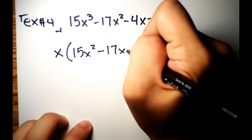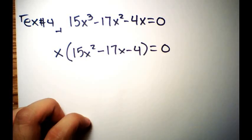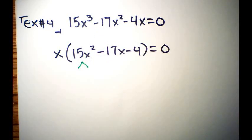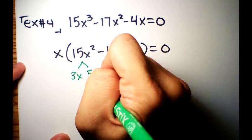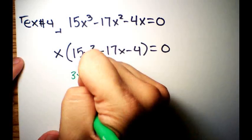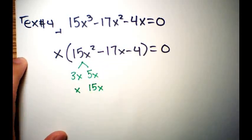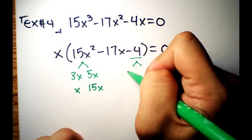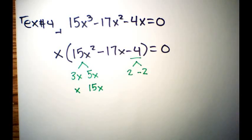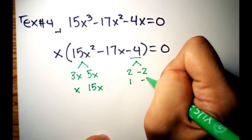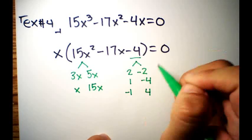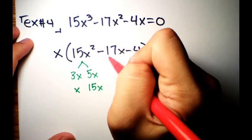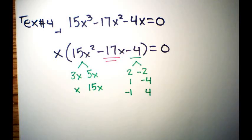Now factor the trinomial 15x² - 17x - 4. For 15x², try 3x and 5x, or x and 15x. For the constant -4, possibilities include: 2 and -2, 1 and -4, or -1 and 4. We need to find the combination that gives a middle term of -17x using reverse FOIL.